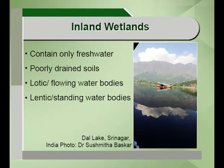The inland wetlands contain only fresh water and have poorly drained soils. They can further be classified into lotic or flowing water body wetlands and lentic or standing water body wetlands. We will be discussing the biodiversity of both the lotic flowing water bodies and the lentic standing water bodies in this module.